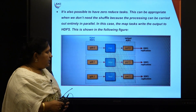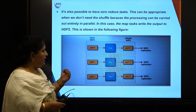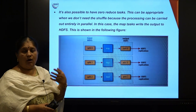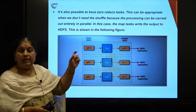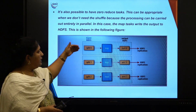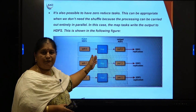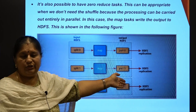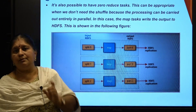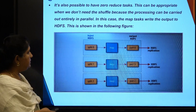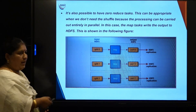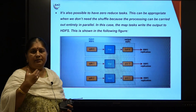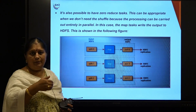There are special MapReduce jobs where the Map function directly generates the output — we call these zero reduce tasks. They do not have a reducer; whatever output comes from the Map function is the final output, written directly onto HDFS. As part of our lab syllabus, we will be writing programs for single reducer jobs, multiple reducer jobs, and zero reduce jobs.